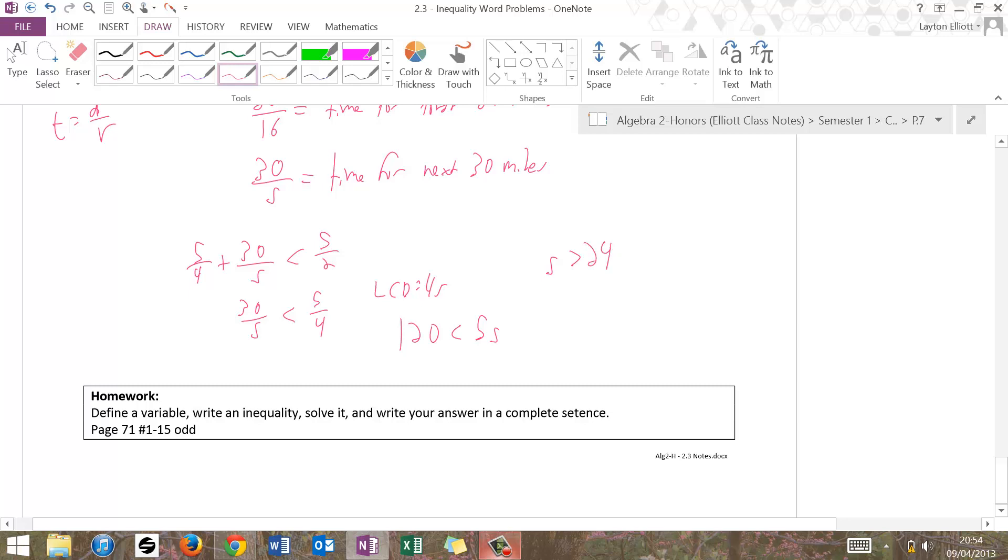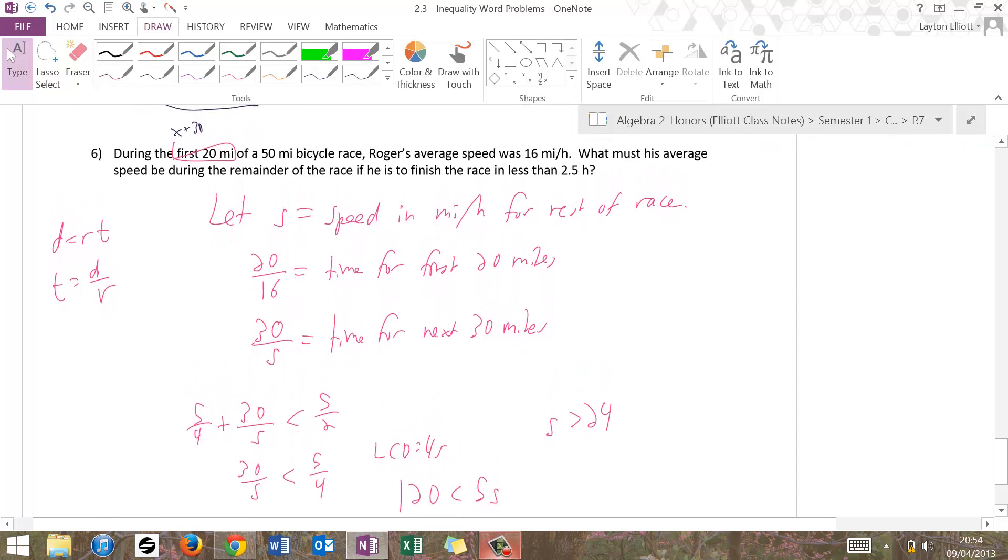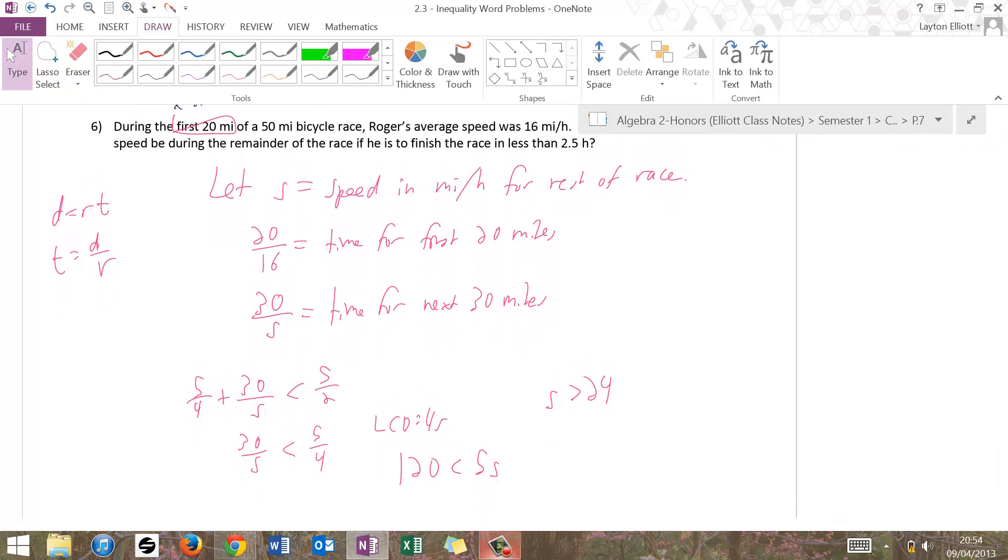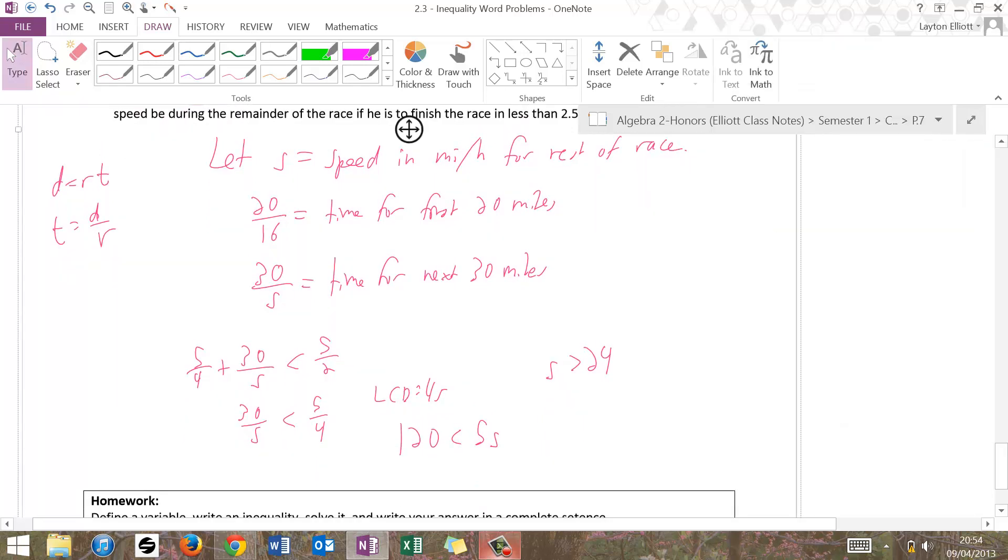Is that right? Yeah. So we know that he needs to, average race if he's to finish race in less than 2 hours. So that means he needs to go greater than 24 miles per hour. So he should bike more than 24 miles per hour.